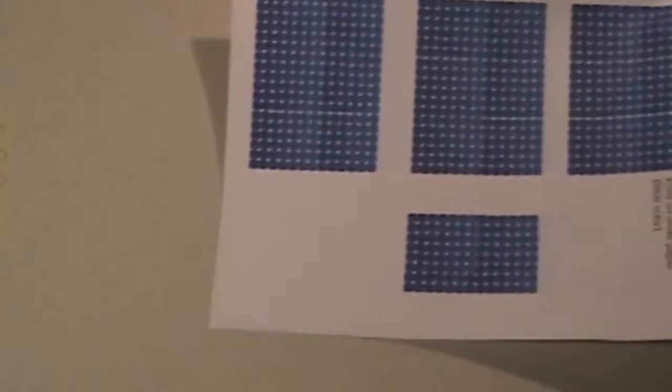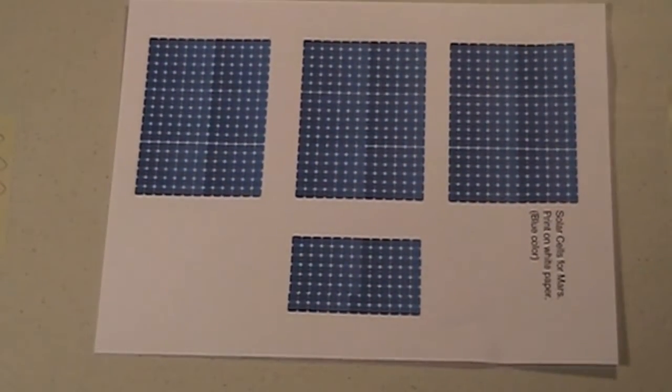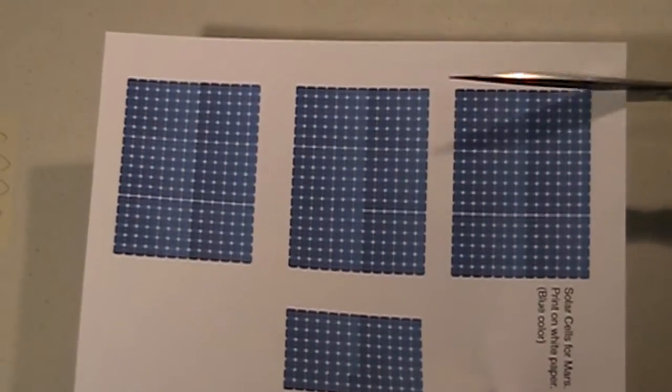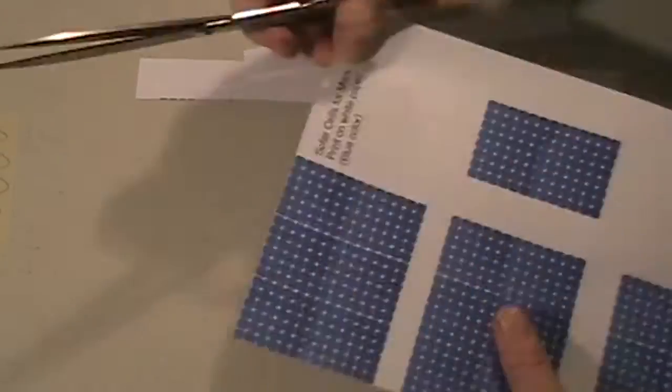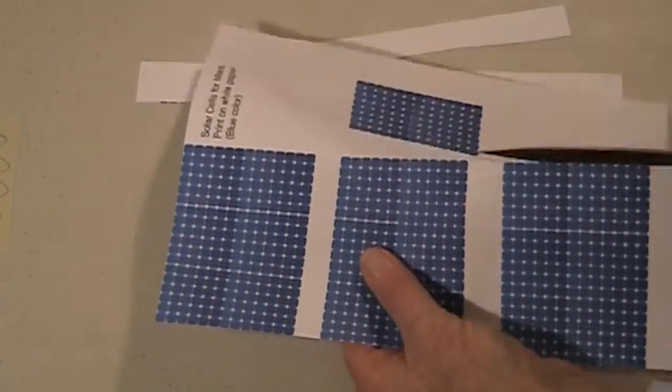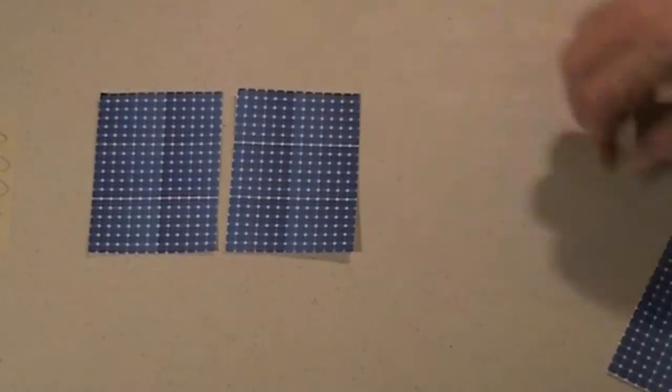Now, let's take the sheet with the solar cells. All you need to do is cut each one of these out individually. As you can see here, you have to be careful cutting along the edge of each one. Now, when you're done, you'll have three large solar panels and one smaller one.